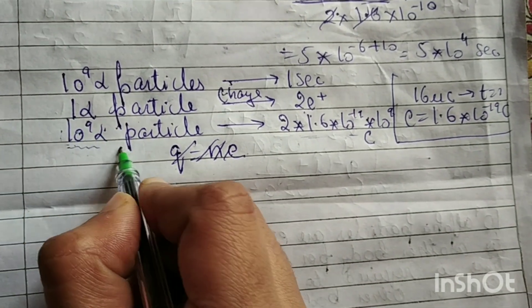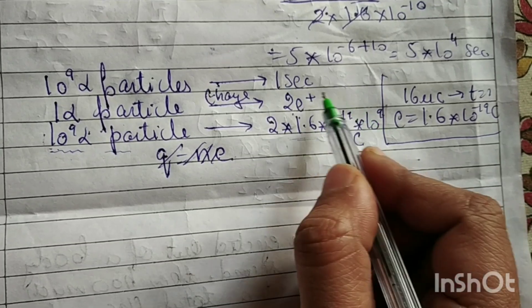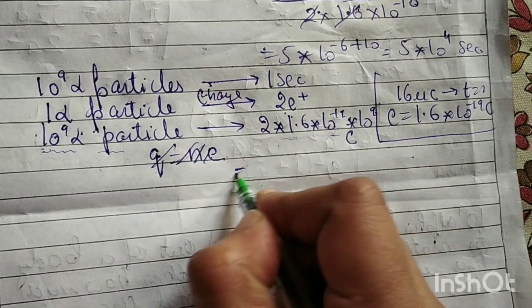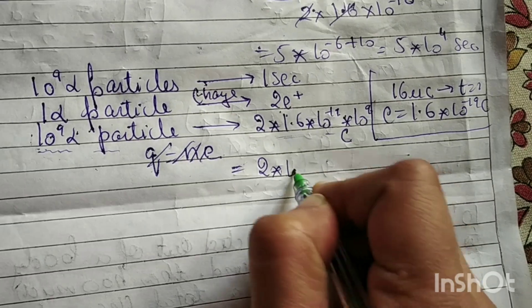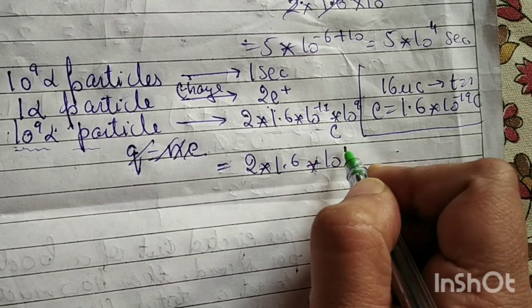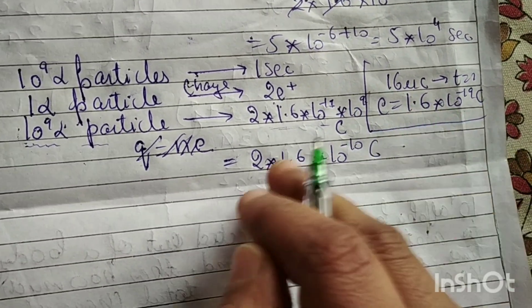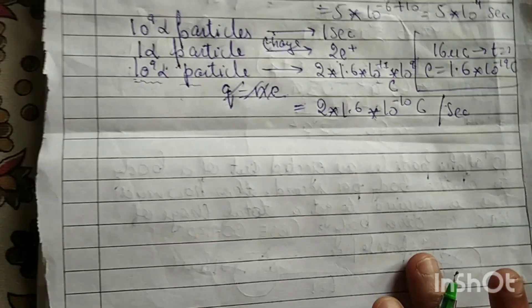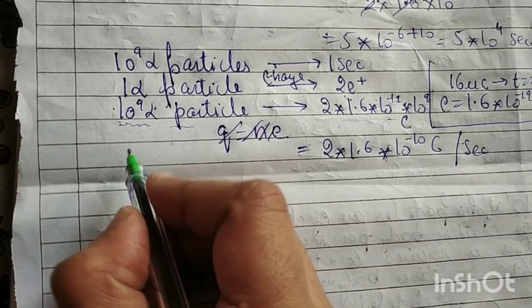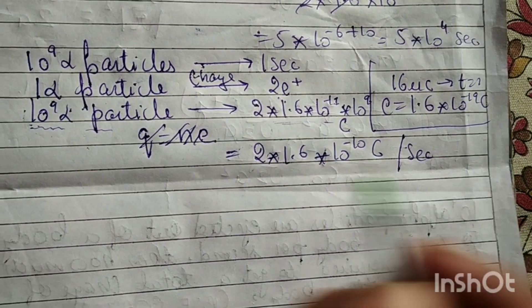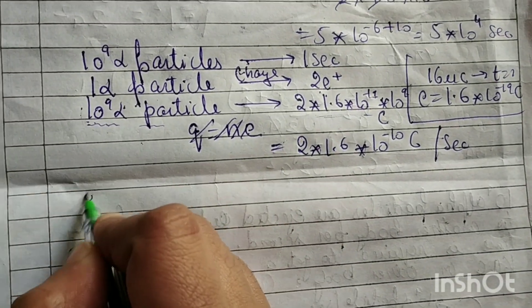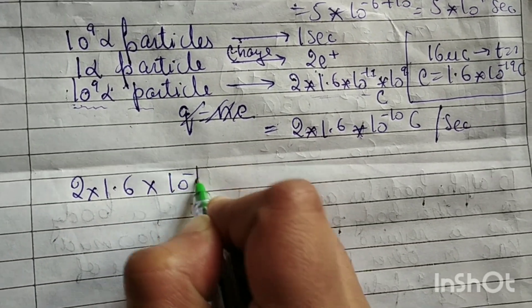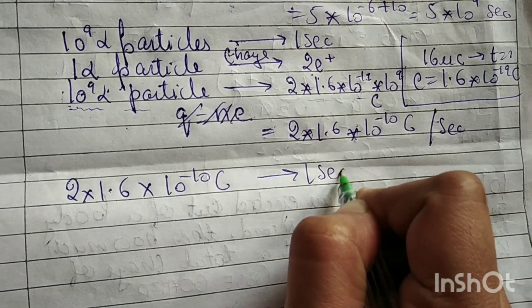So 10 to the power 9 alpha particles eject out in one second, meaning a charge of 2 into 1.6 into 10 to the power (minus 19 plus 9), which is 2 into 1.6 into 10 to the power minus 10 coulombs, is ejected out of the body per second.